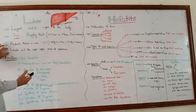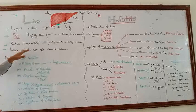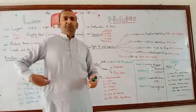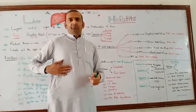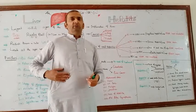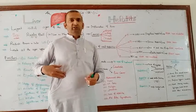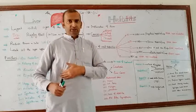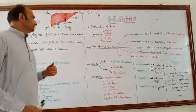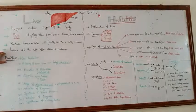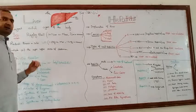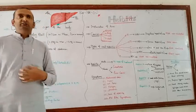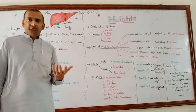The liver weighs about 1.8 kg in men and 1.3 kg in women. Its location is the right upper area of the abdomen, below the ribs. It is present in the right area of the abdomen, and it performs very many functions — it is a vital organ.